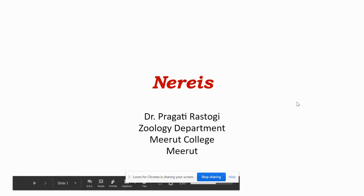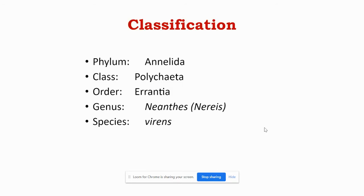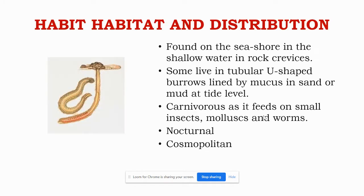Hello, this is Dr. Pragati Rastuti, Zoology Department, Merit College, Merit, and today I am going to discuss Nereis. Nereis belongs to Phylum Annelida, Class Polychaeta, Order Errantia. Genus is Neanthes or Nereis and the species is virens.